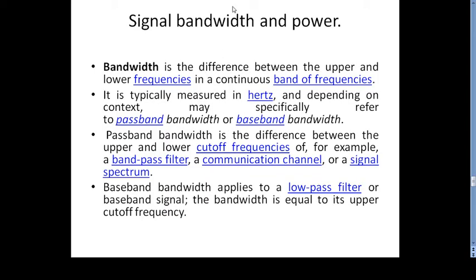We now go to signal bandwidth and power. Bandwidth is simply defined as the difference between the upper frequency and lower frequency in a continuous band of frequencies — that is, the difference between the upper cut-off frequency and the lower cut-off frequency. It is typically measured in hertz. Pass-band bandwidth is the difference between the upper and lower cut-off frequencies, for example in a band-pass filter, communication channel, or signal spectrum. Base-band bandwidth applies to a low-pass filter, where the bandwidth equals the upper cut-off frequency. So bandwidth equals upper frequency minus lower frequency.